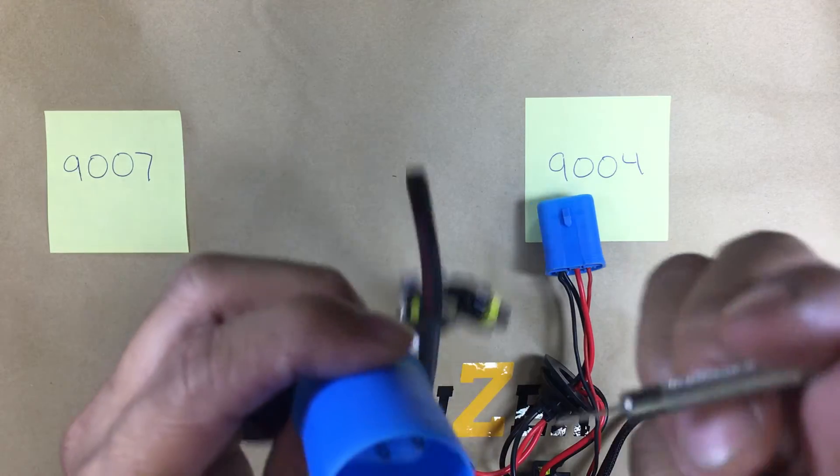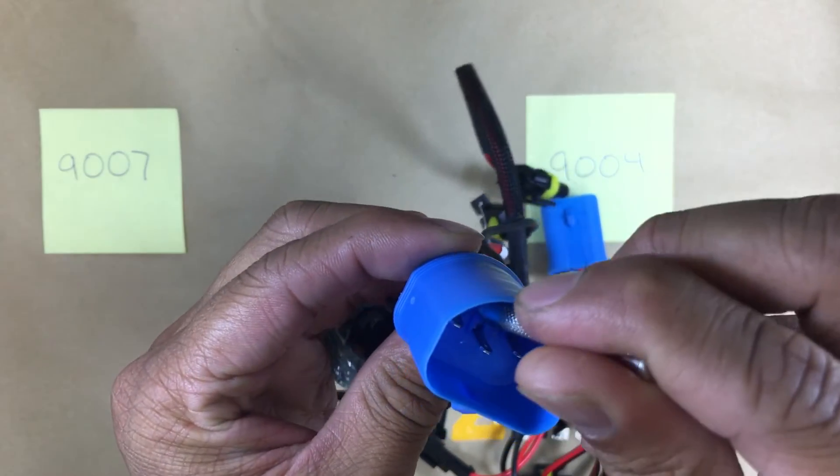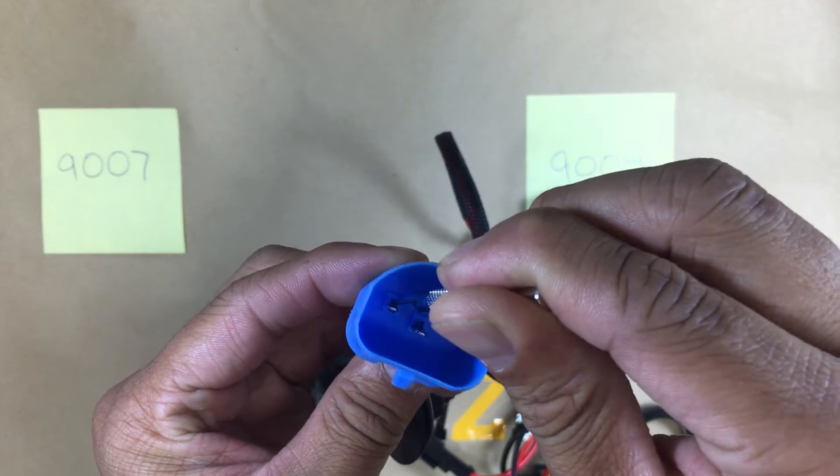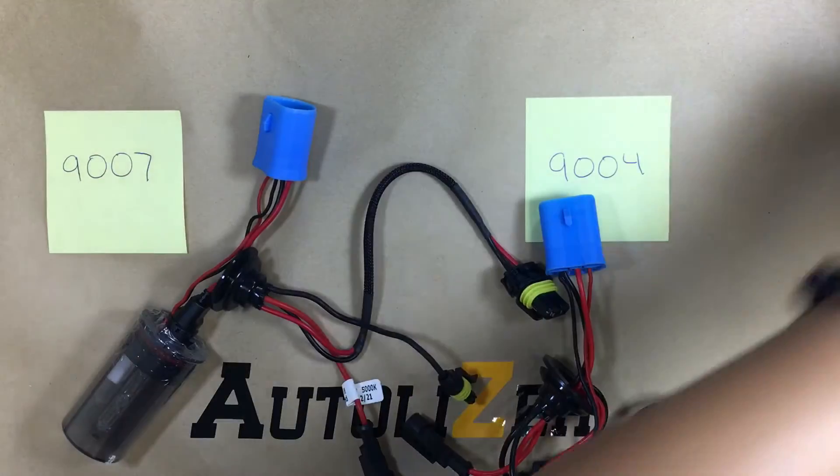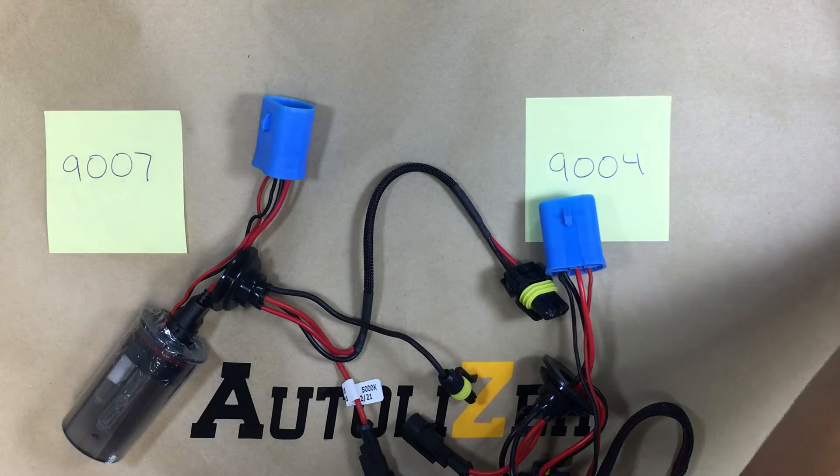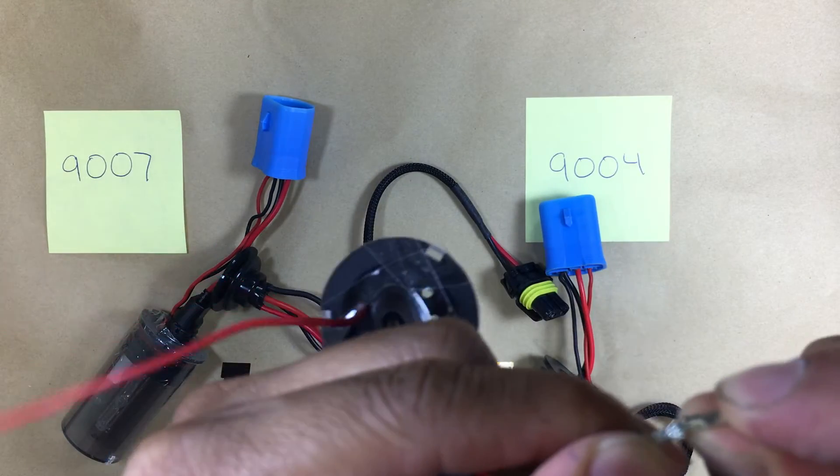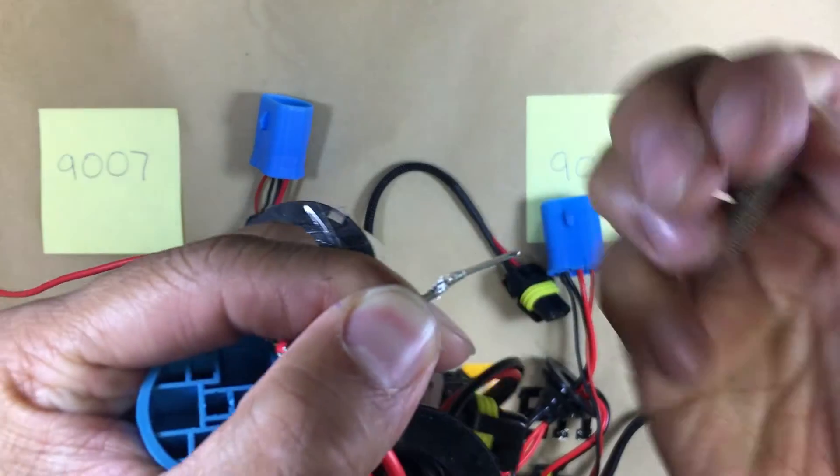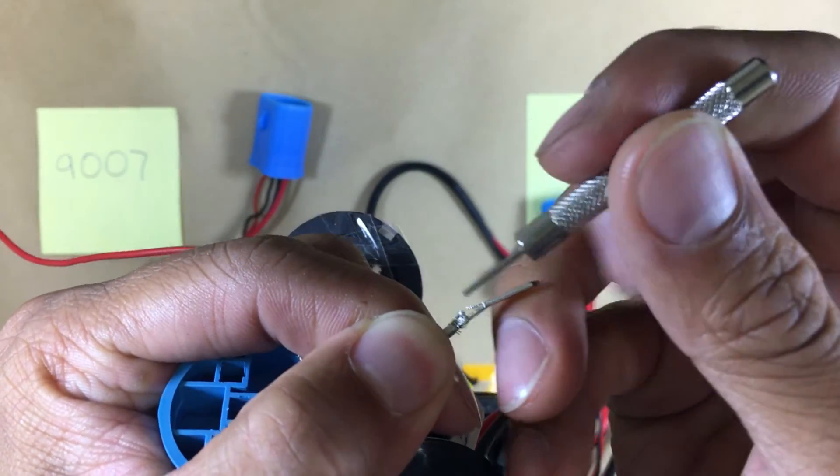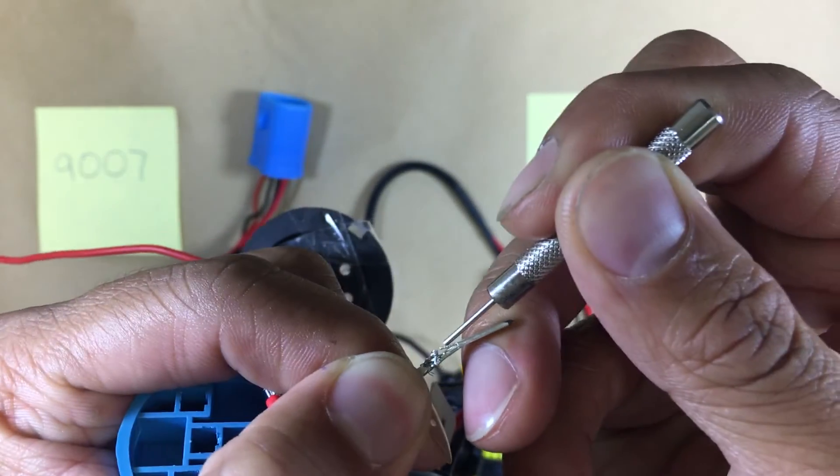This is what it looks like inside. So what you're doing is you're basically - let's get this to focus - you're pressing down on this little tab right here. So when you press down on the tab, it should release.